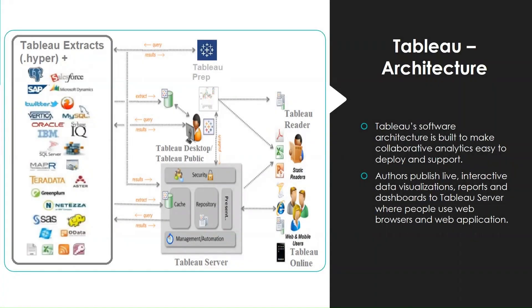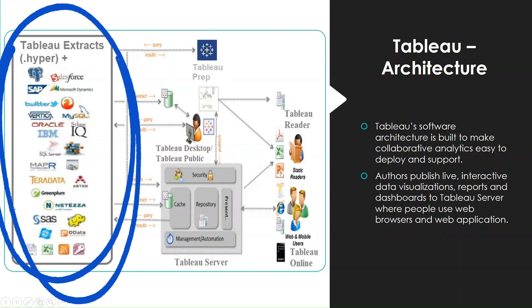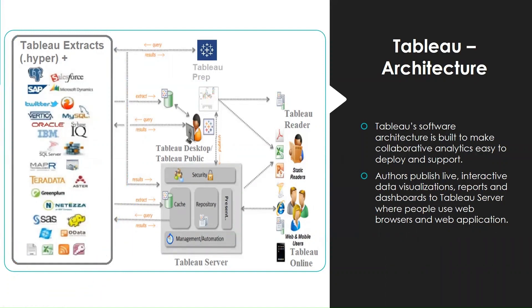On the left you have different data sources. The .hyper format you see is the Tableau extract. Earlier it was .tde — Tableau Data Extract — but later there was an update and it became .hyper. A Tableau extract is where Tableau creates or converts the data into its own readable format for better processing, which is basically a snapshot of data. You can refresh it to get the latest data.